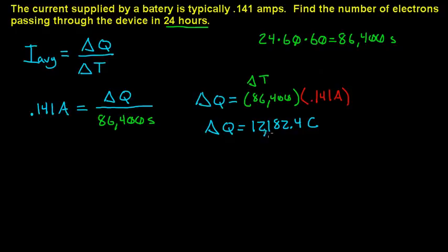All right, so we've got 12,182.4 coulombs. Now we need to figure out how many electrons are going through this device. Well, we know that one electron is equal to 1.6 times 10 to the negative 19th coulombs.